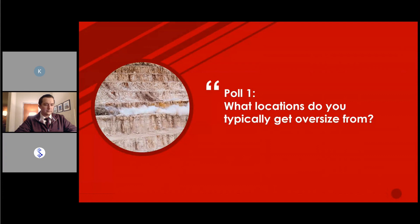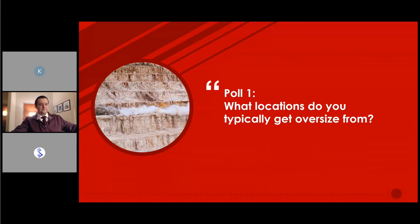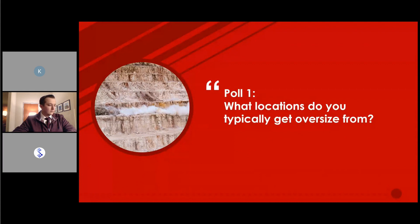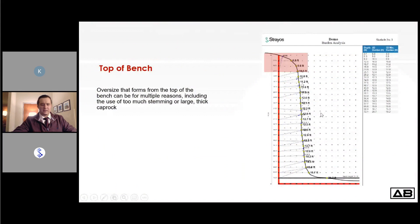We opened a poll asking what locations attendees typically get oversize from. The results showed that the top of the blast received the most responses, with the front of the blast also significant. The winner is the top of the blast — which is actually the next topic we'll address: how to deal with caprock.